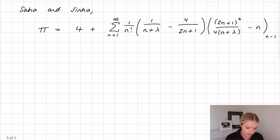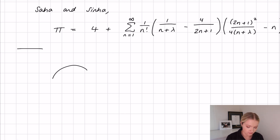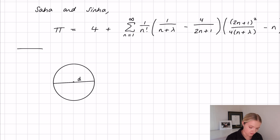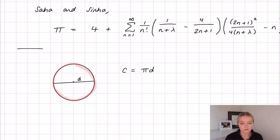Before diving into the intricacies of this formula, let's first talk about the history of pi and where pi was initially discovered. The first thing we can say is: if we have a circle with diameter d, we know through mathematics that the circumference is pi times d. So essentially what you could do is take a circle, measure the circumference with a piece of string, measure the diameter, and then pi is just circumference divided by diameter — a very elementary way of computing pi.